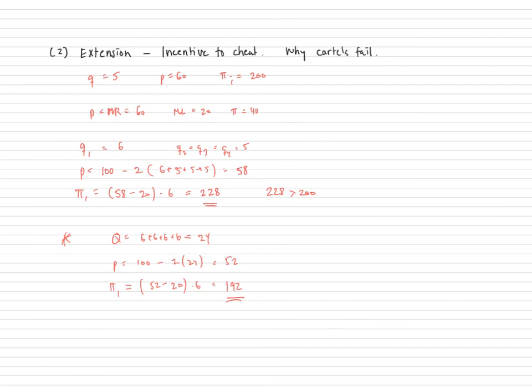All right. So here you can see that if all firms cheat on the agreement by producing a little bit more, then all firms are worse off. So here's the dilemma with cartels and collusion in general. It is very hard to get the firms to stay within the agreements of the collusion.